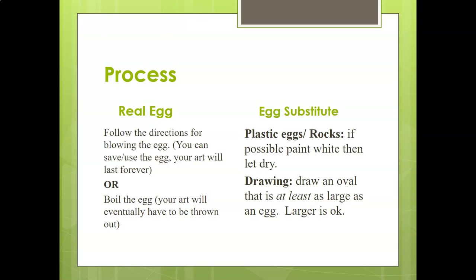If you're using an egg substitute — plastic eggs and rocks — if at all possible, paint them white and let them dry so your designs will show up. When you're drawing, start by drawing an oval that is at least as large as an egg. Larger is okay.